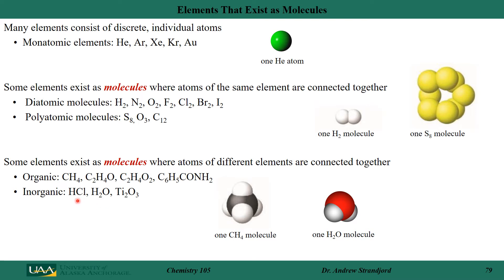We've talked about water. Hydrochloric acid is HCl. Titanium oxide is titanium atoms and oxygen atoms bound together to form a molecule. Notice here I've represented the monatomic elements as a single sphere. The diatomic and polyatomic molecules of the same element are shown as spheres connected together, and molecules made out of different elements are also represented as spheres connected together.